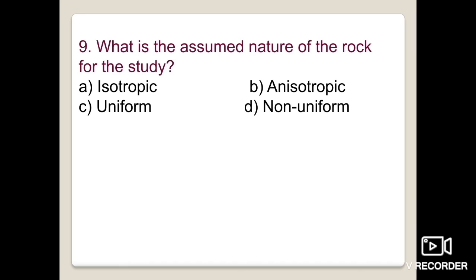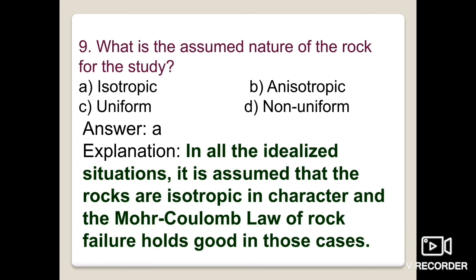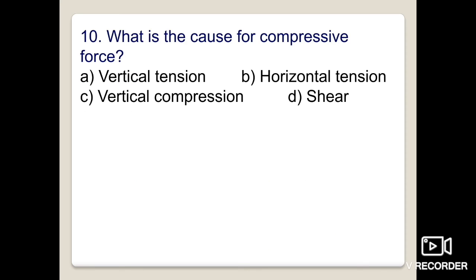The ninth question: what is the assumed nature of rock for study — isotropic, anisotropic, uniform, or non-uniform? The answer is isotropic. In all idealized situations, rocks are assumed to be isotropic in character, and the Mohr-Coulomb law of rock failure holds good under those conditions. The Mohr-Coulomb law is an important law that will be discussed in detail in the descriptive section.